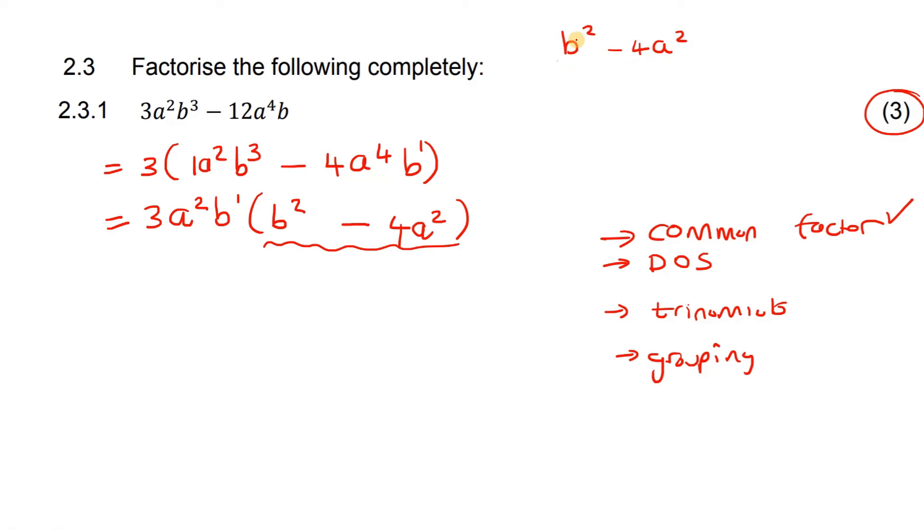Why? Because b times b would give you b², and two a times two a would give you four a². So this is a perfect difference of squares. So we go on to the next step.